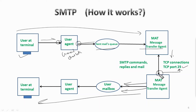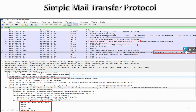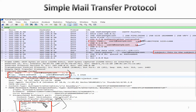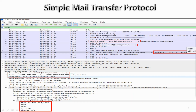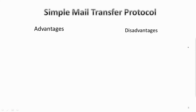Here we have a Wireshark capture of SMTP, where we can see the sender and receiver of the email. Further down, the internet message format shows the sender, receiver, and subject of the email. Looking deeper, we can see the message body showing what is written in the email. Using a Wireshark capture, you can identify what is inside an SMTP packet.